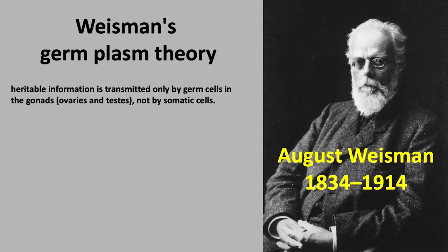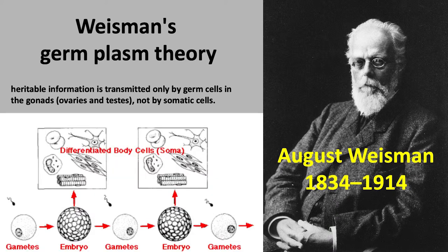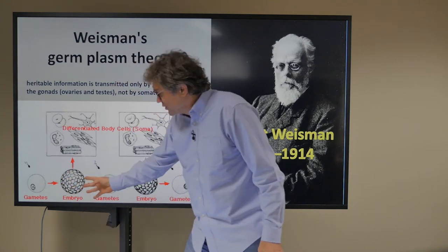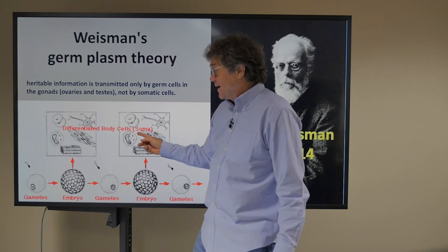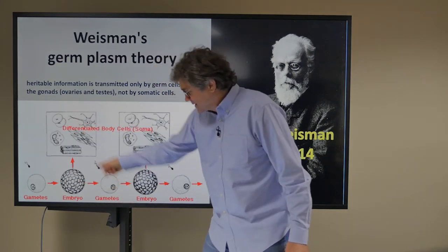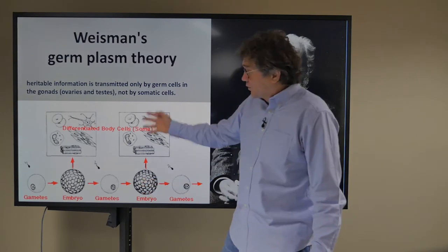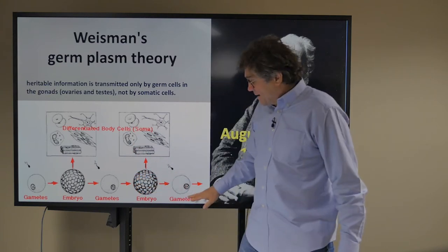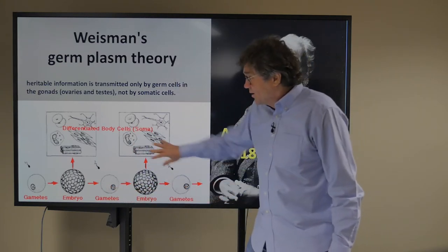This is August Weismann — he looks like a wise man. He came up with the germplasm theory over a hundred years ago. The idea is that heritable information is transmitted only by germ cells in the gonads — the ovaries and testes — not by somatic cells. A sperm fertilizes an egg, it turns into an embryo, the embryo develops into a differentiated body — the soma — but also produces another gamete, which gets fertilized again, turns into another embryo, and so on. All of the germline is immortal, and all the somas die, die, die.